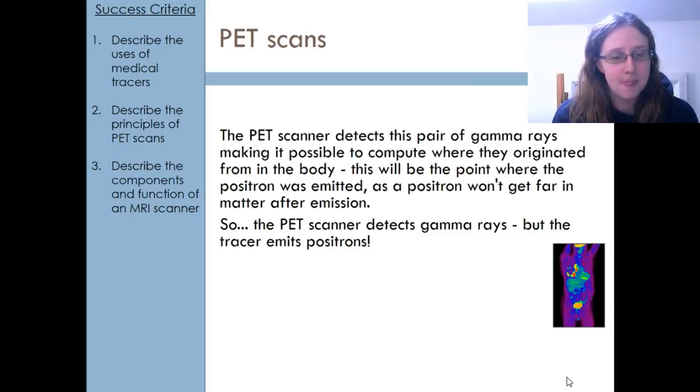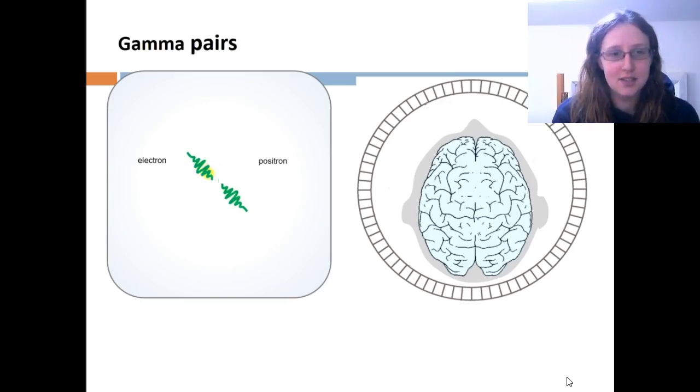We need to make sure we're talking singulars here. A positron interacts with an electron and annihilates; that produces two gamma rays which travel in opposite directions.